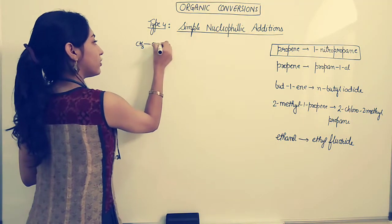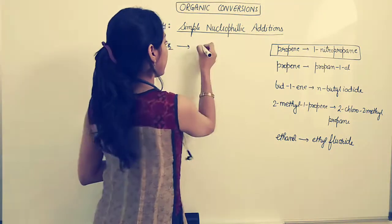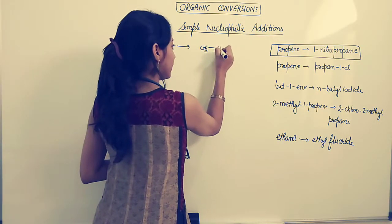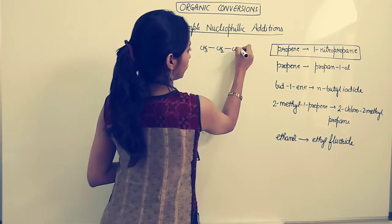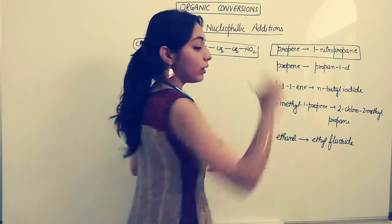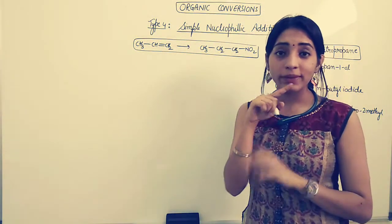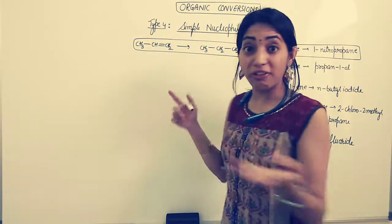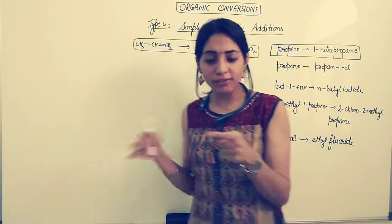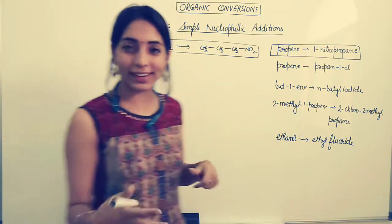So the first thing I do is to draw the structure. CH3-CH double bond CH2, this is propene. 1-iodopropane is CH3-CH2-CH2-I. How will we get to know that this question belongs to this particular category? You can see the double bond is vanishing. Whenever this double bond is vanishing out, that means some nucleophilic addition would have taken place.